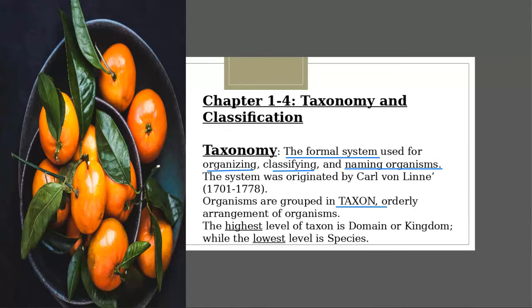The highest level of taxons will be domain or kingdom, which includes all organisms in this world. The lowest level of taxons will be species. Species is only a group of one type of organism — for example, human. So human is a species.